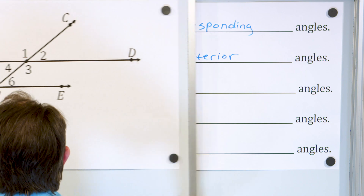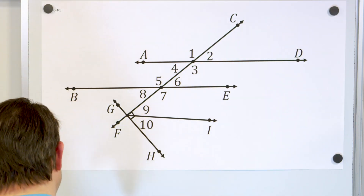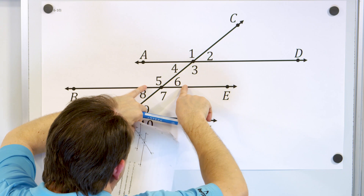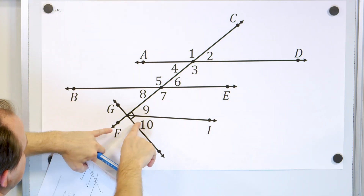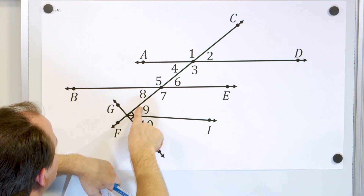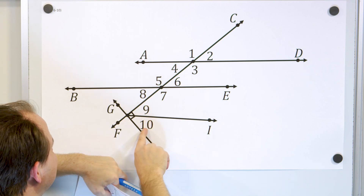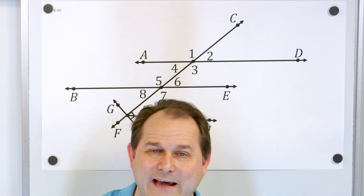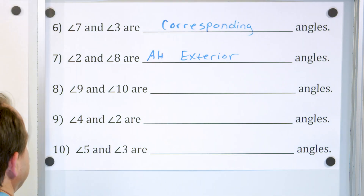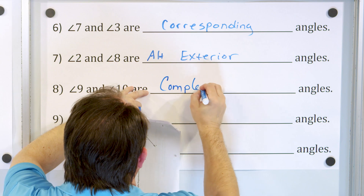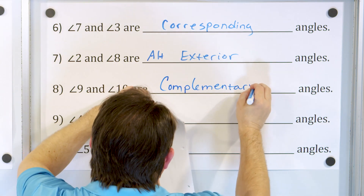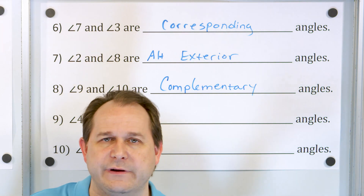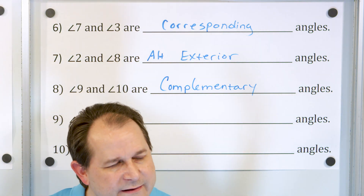Angle nine and angle ten — what are they called? This is one we haven't come across yet. Angle five and six were supplementary because they add to 180 degrees. But look at nine and ten — the little box in the corner means the entire angle is 90 degrees. So angle nine plus angle ten must add to 90 degrees. When two angles add to 90, we call them complementary angles. Complementary angles add to 90 degrees; supplementary angles add to 180 degrees — try to burn those in your mind.